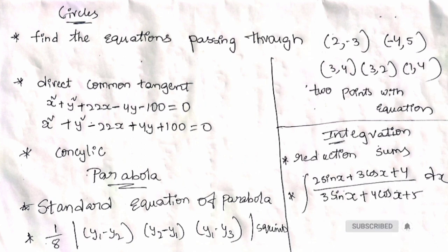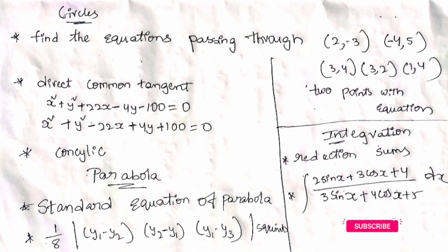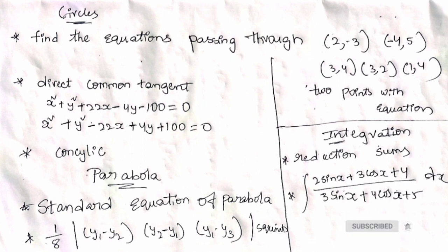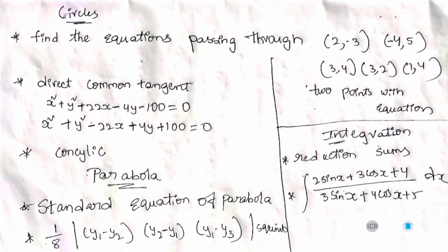We will also cover the Con-Cyclic sum, which appeared in previous papers. Additionally, we will cover the Transverse Common Tangent. That is one model. In total, we will cover four models here.